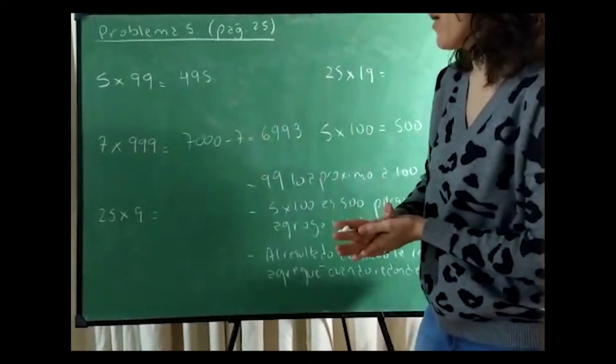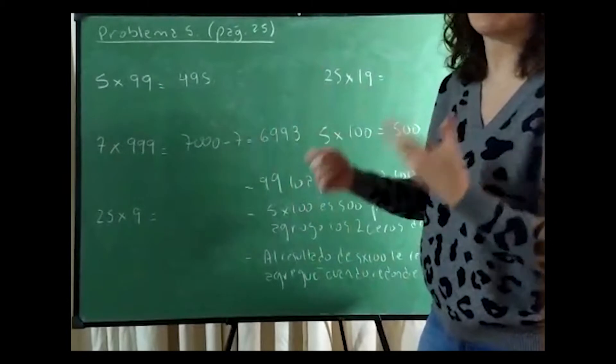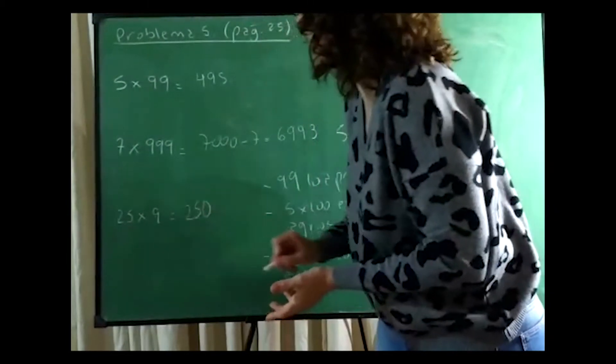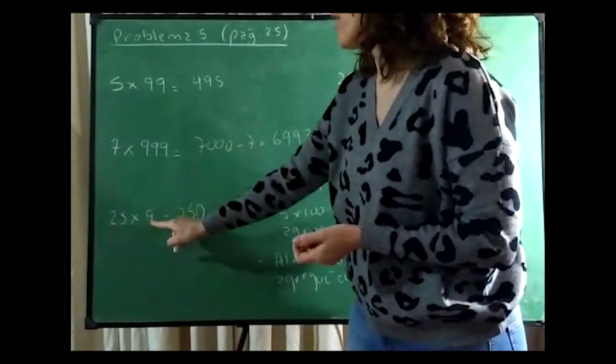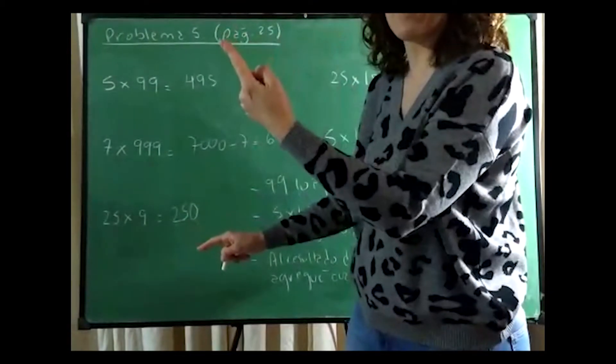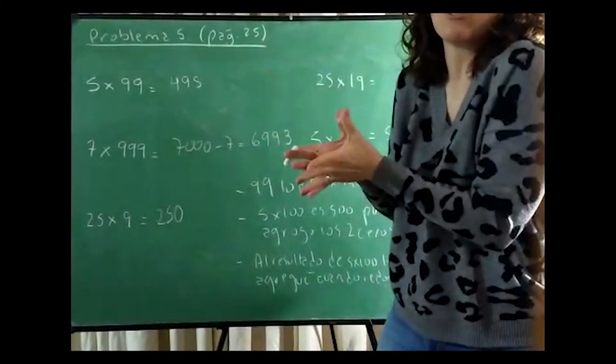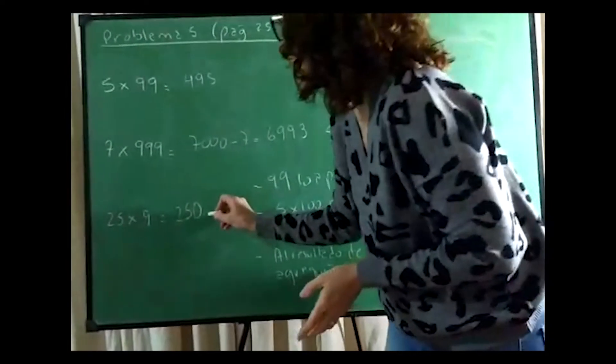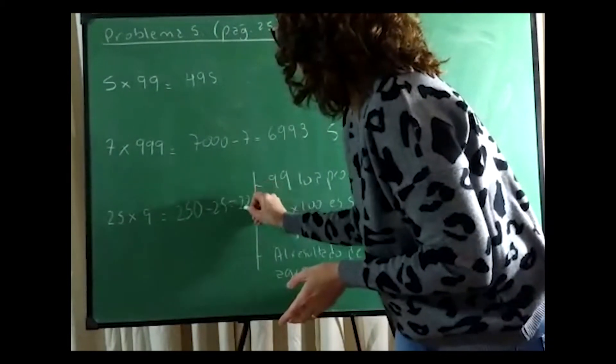What happens here? 25×9. 25×9 doesn't suit me. It suits me to do 25×10. Why? Because I add a 0 to 25. So it will be 25 and the 0 I add makes 250. But I added 1 to the 9, taking it to 10. Therefore, that 1 when I multiply by 25 gives me 25 extra. I have to subtract 25 from this. If I subtract 25, the final result is 225.